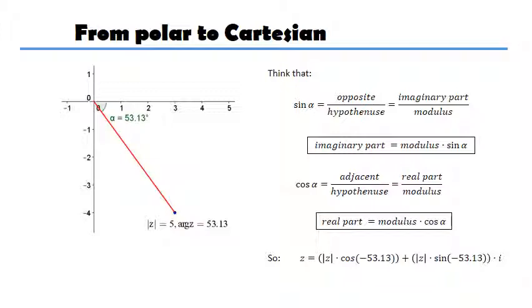It's going to be 5 times the cosine of minus 53.13 plus 5 times the sine of minus 53.13. And that's how I'm going to get my complex number in Cartesian form. So that's really it. That's how you go from one to the other and back. And that's the whole idea of the polar form.